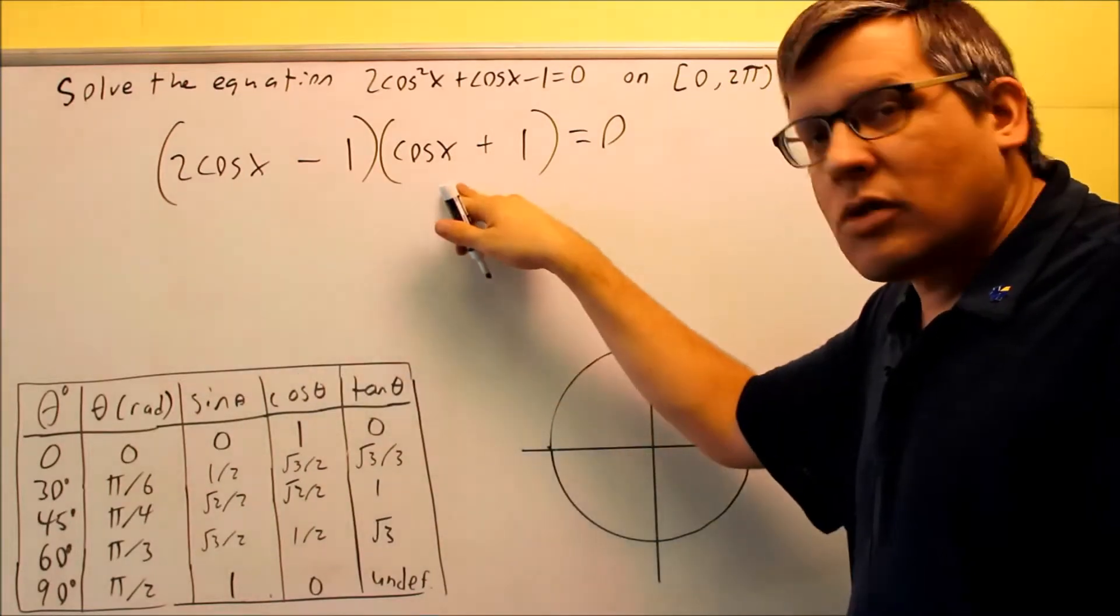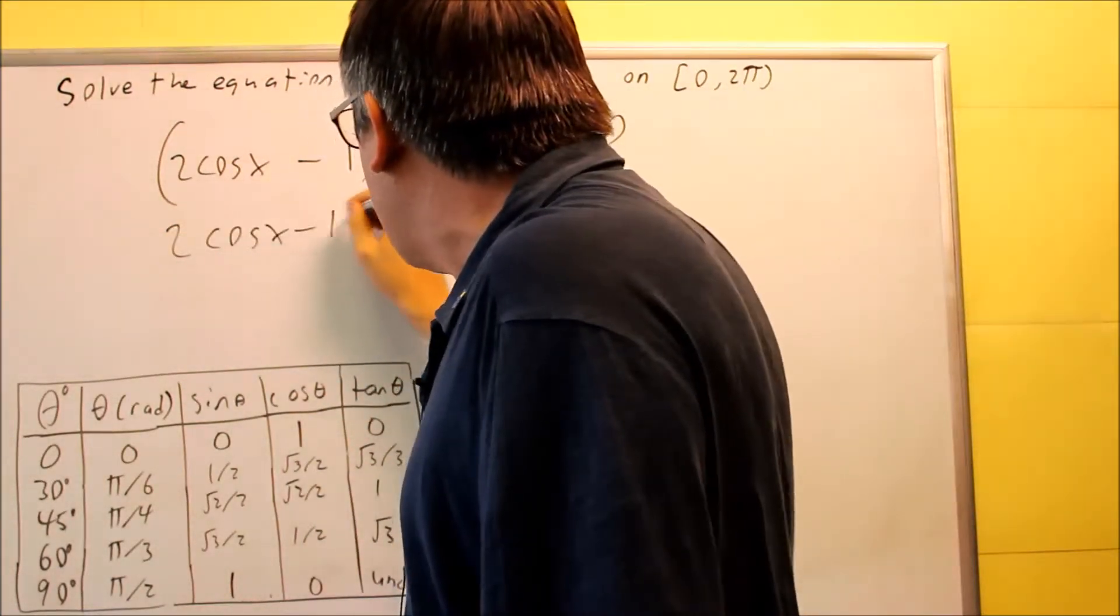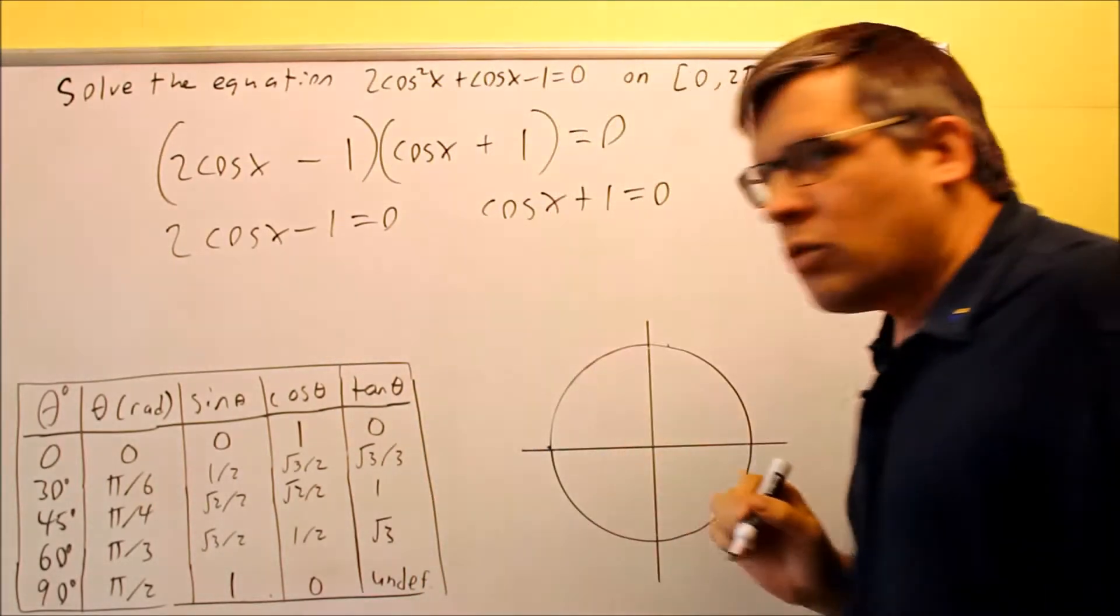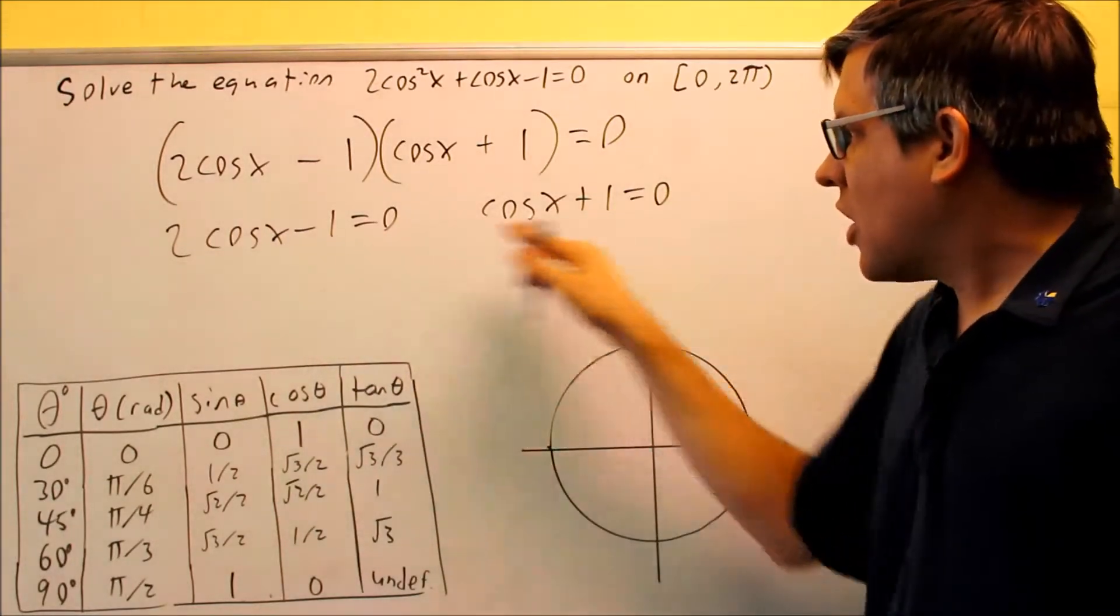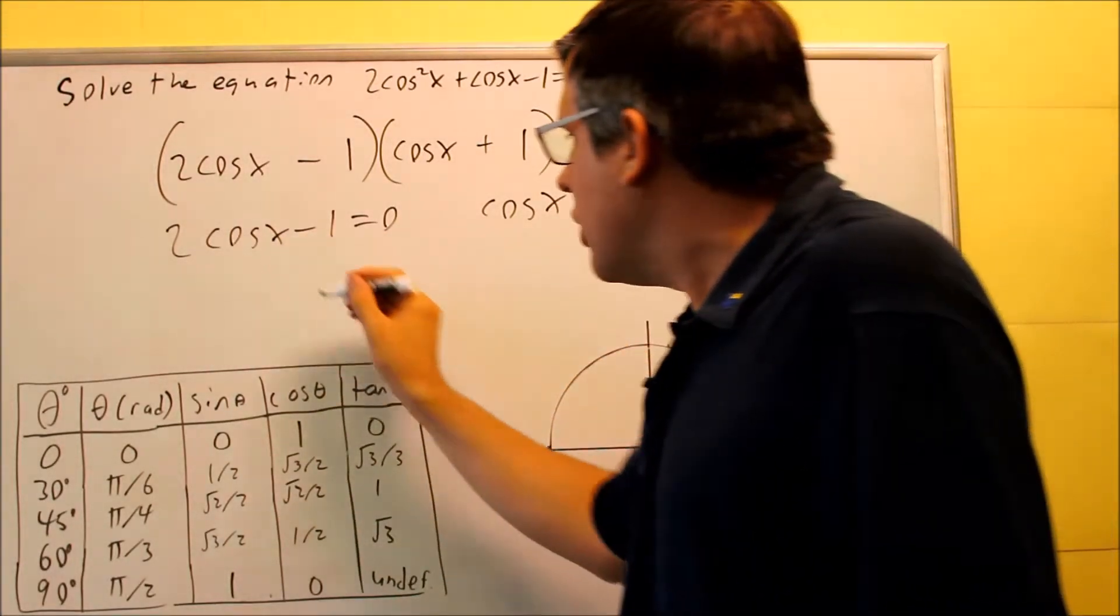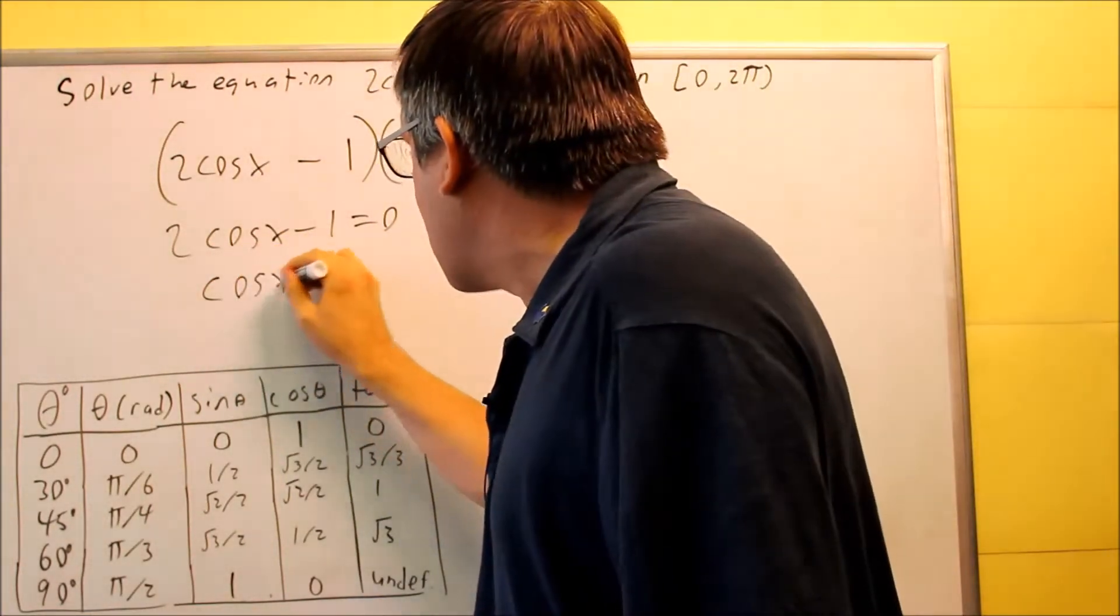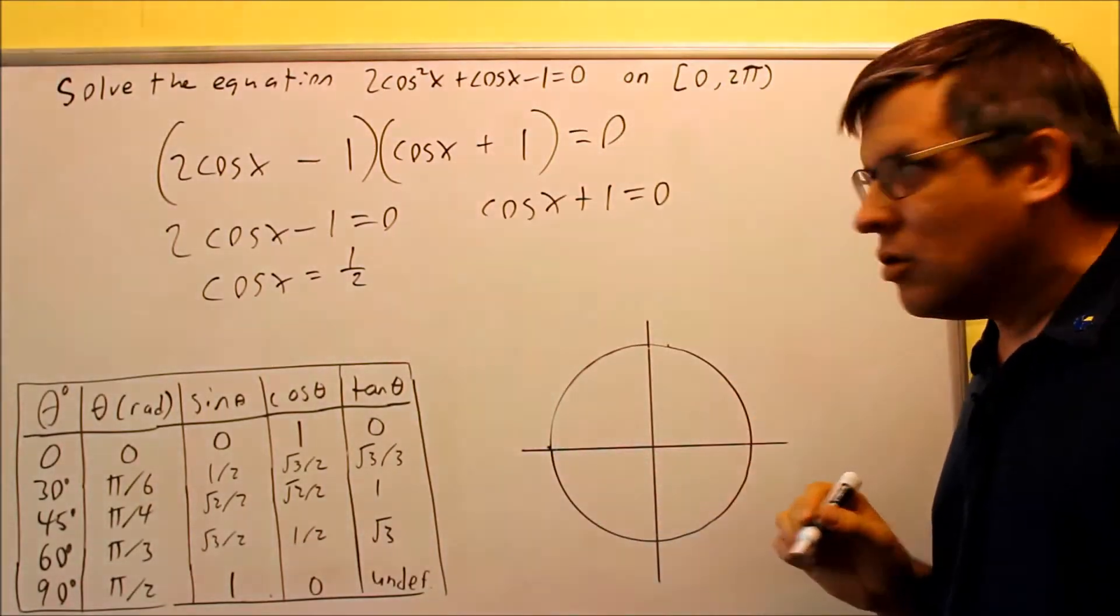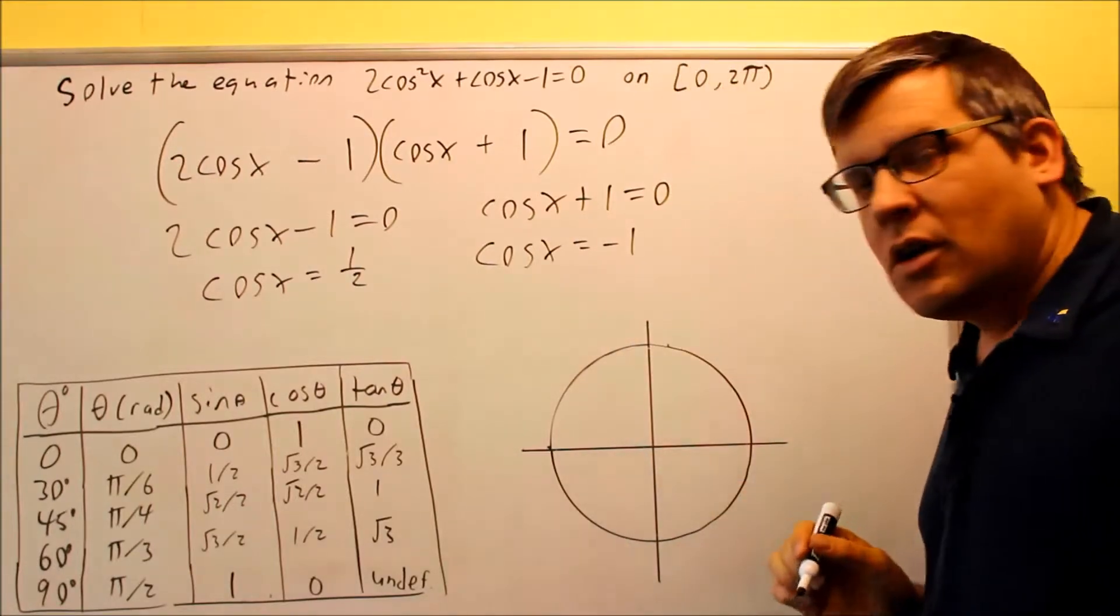Each one, now that it's set equal to zero, we're going to make two separate equations. So two cosine x minus one equals zero and cosine x plus one equals zero, setting them both equal to zero individually. We're going to solve each one of those. For this one, if we solve that, solve for cosine, treat that as a variable, we're going to get cosine x equals one half. Add the one, divide by two. This one, we get cosine x equals negative one.